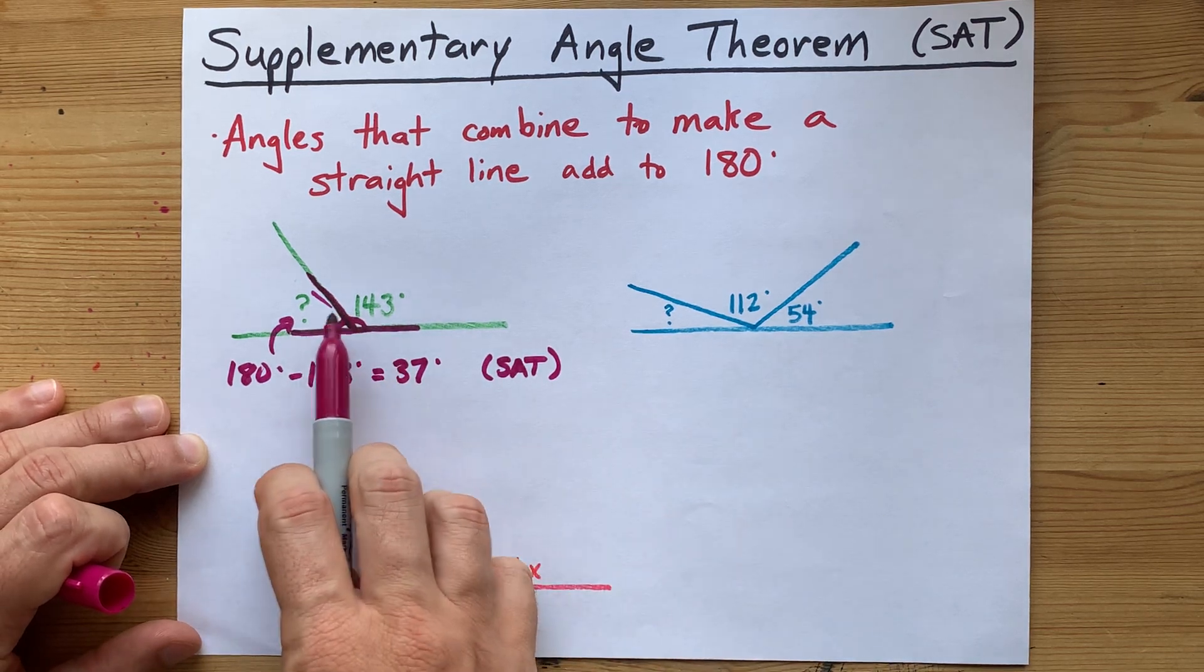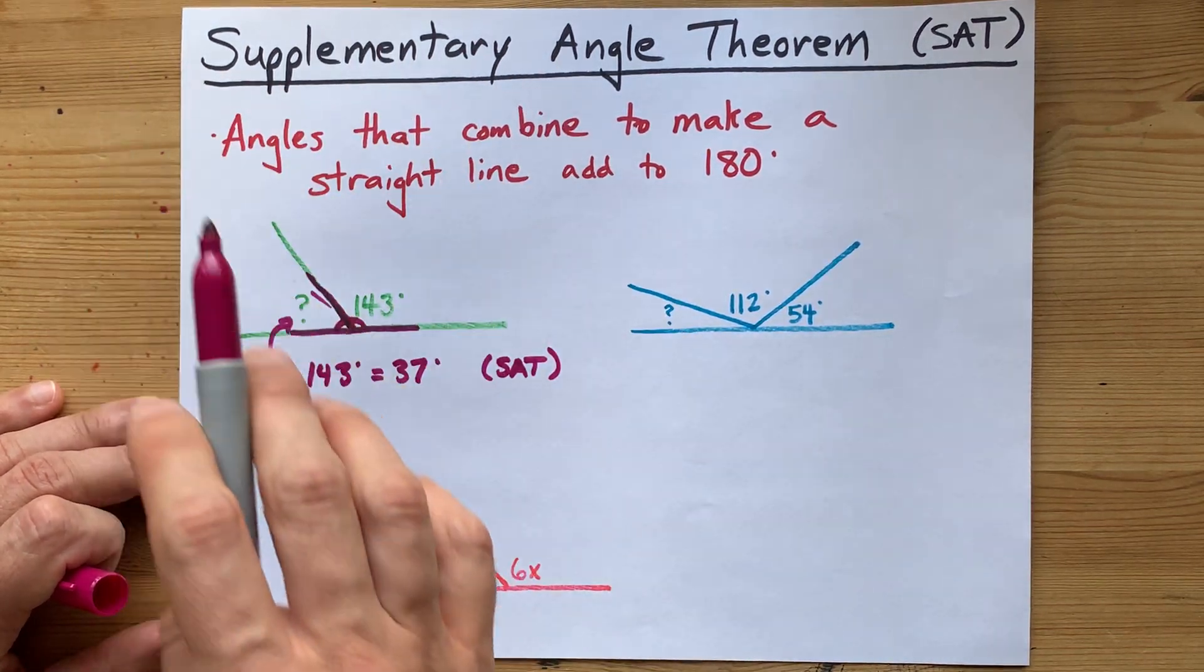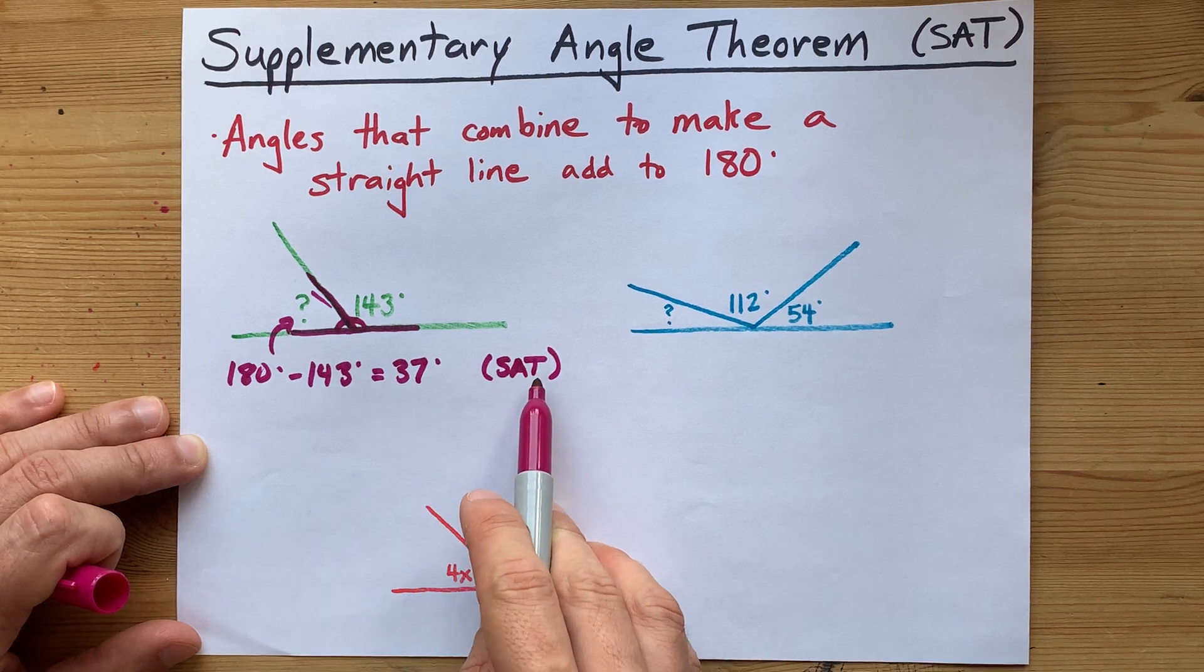The answer is, if they add to 180, they're called supplementary angles, and you're using the Supplementary Angle Theorem.